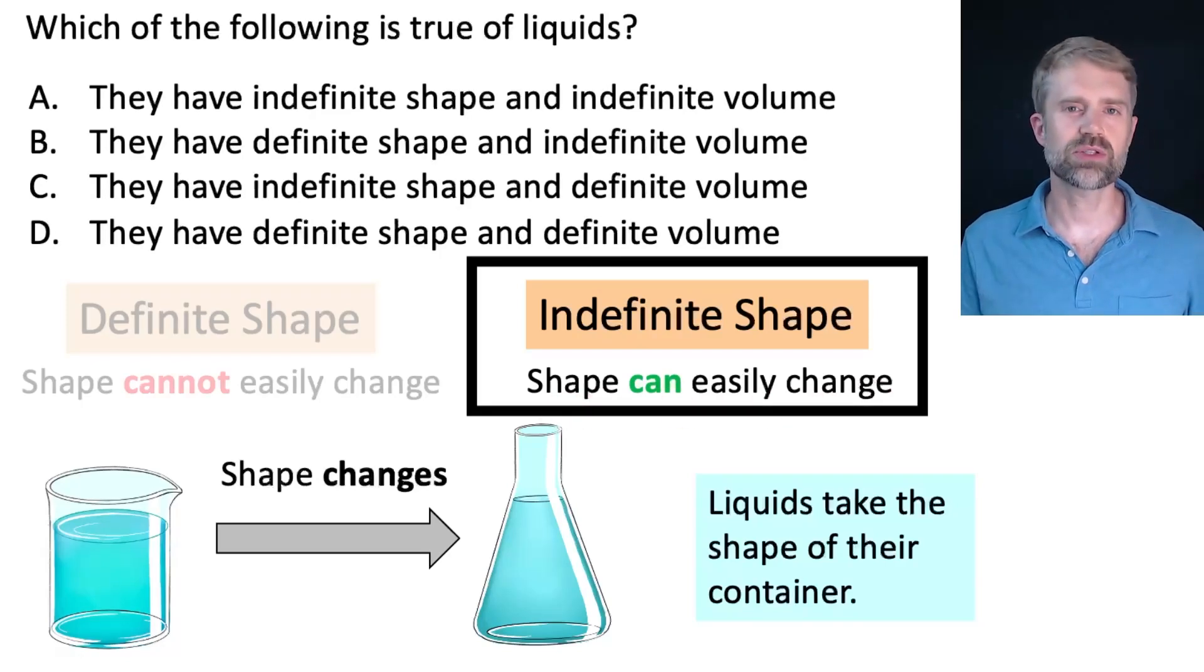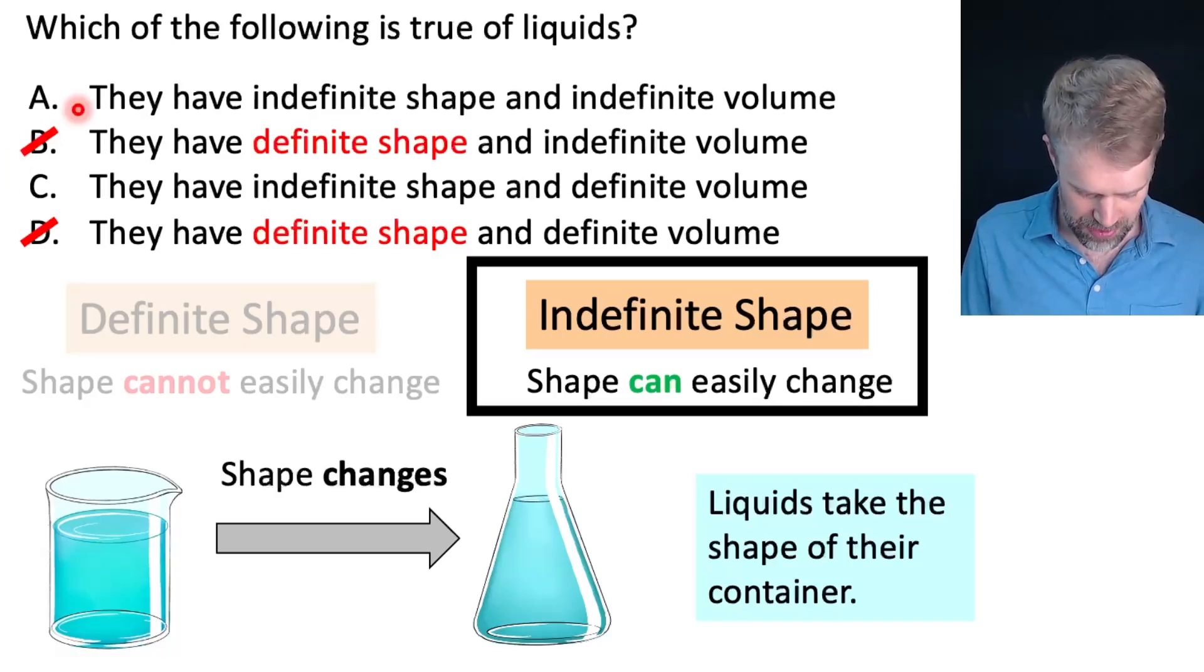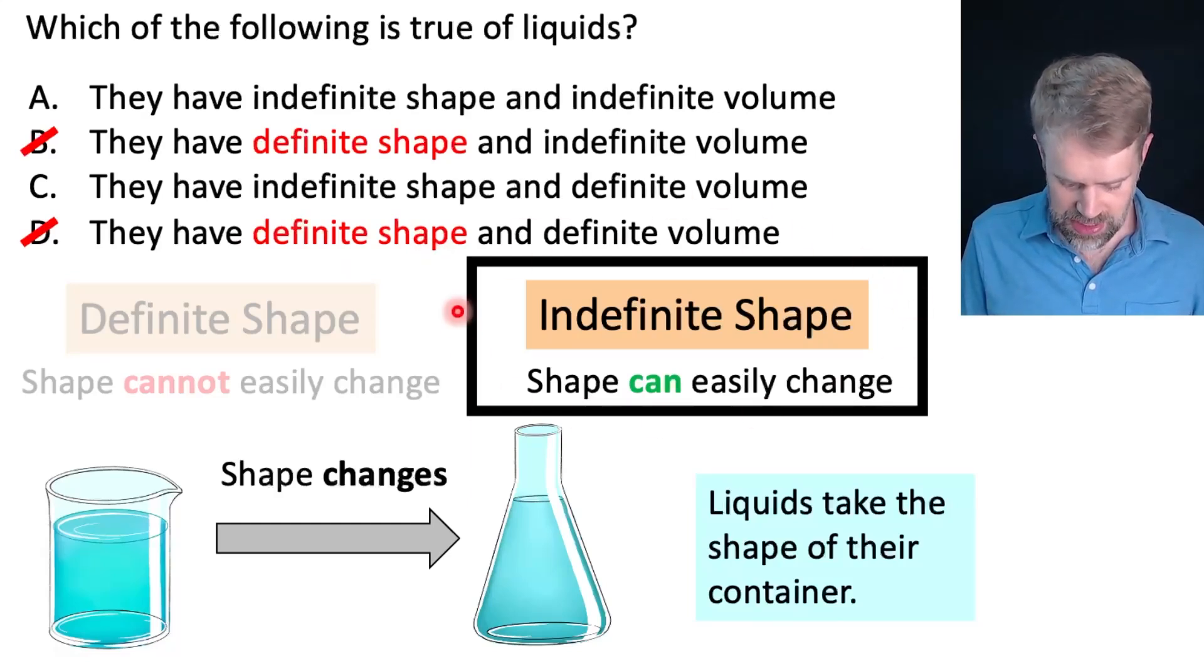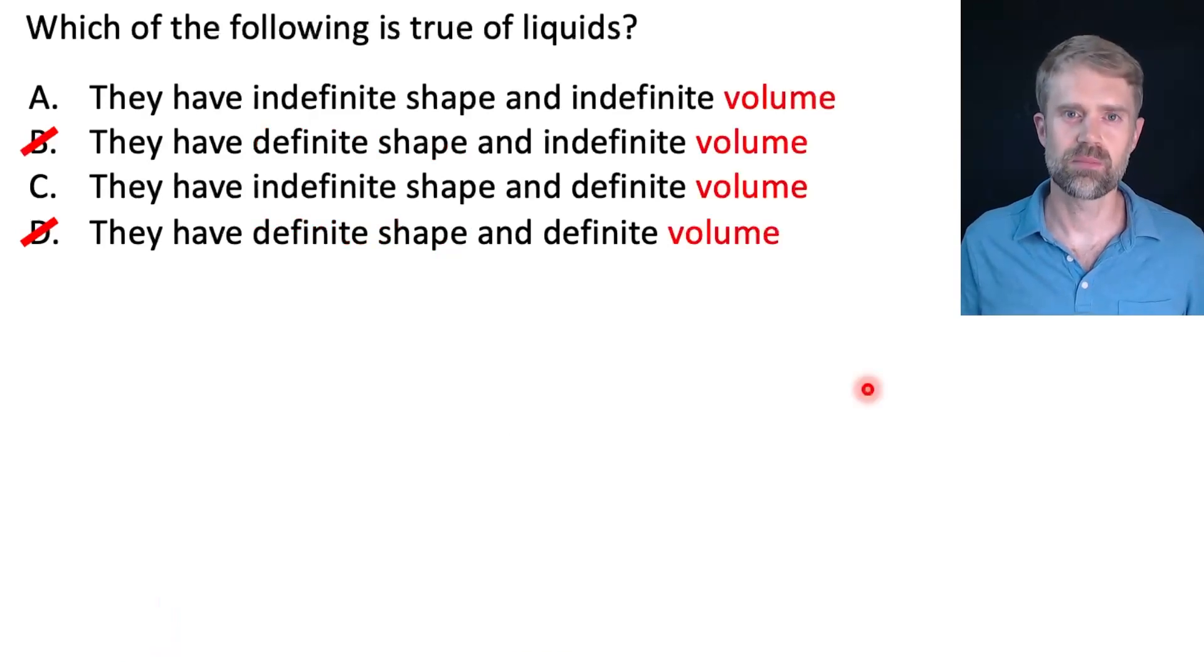Let's look back at the answer choices. Can we eliminate anything yet? Yeah, we can. We can actually get rid of half of the answers. We can cross off B and we can cross off D because they both say definite shape and we know that for liquids, shape is indefinite. Okay, cross off B and D. We're halfway there.